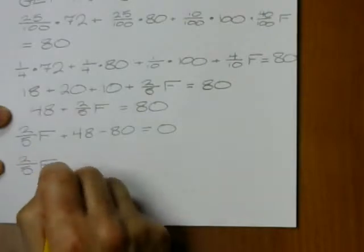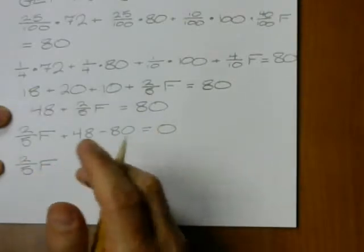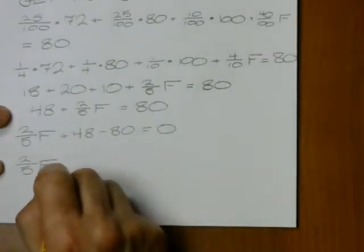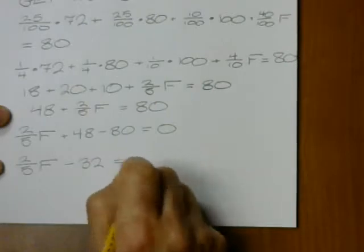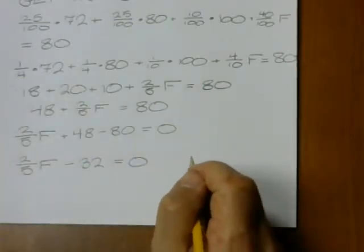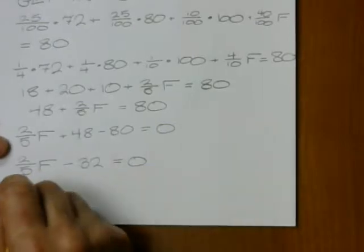2 fifths F, and let's see, what would we need to add to 48 to make 80? Well, we need to add 2 and then 30, so 32. So the answer to my question is just going to be,